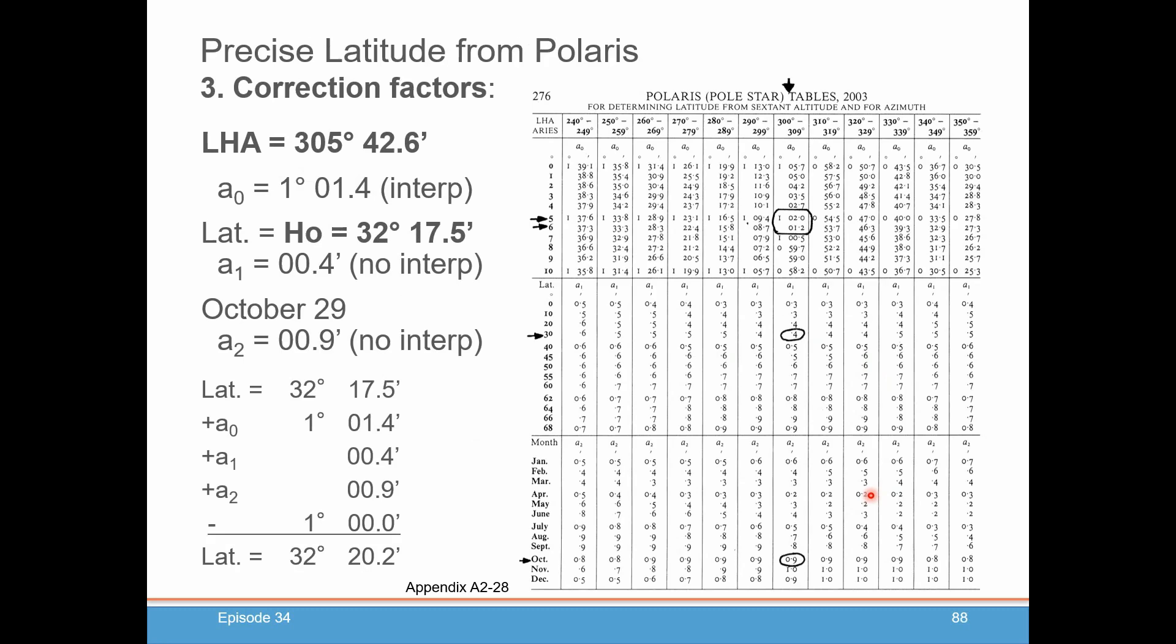And here's that Polaris table in the back of the nautical almanac. You can see this was for 2003. And we've recorded a couple of pieces of information. We record our LHA. We record our approximate latitude, which is basically just our HO. And we go into the table. So first thing you need to do is find the column with the range of your LHA. So we're 305 degrees, 42.6 minutes, so that's this column. Now you want to stay in this column.